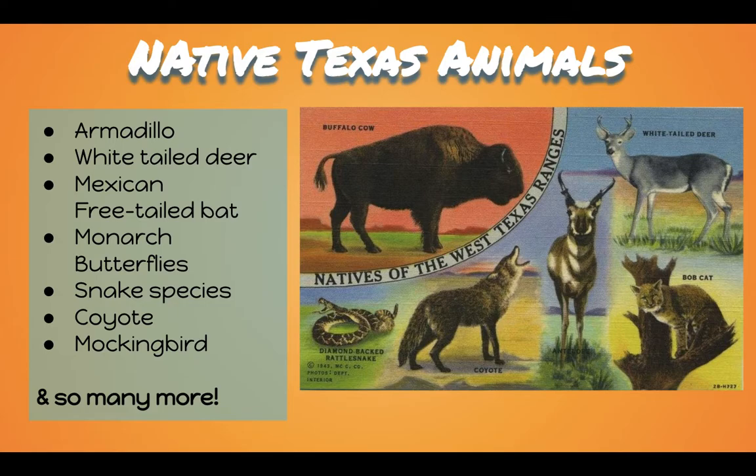First, let's talk about some native Texas animals. Of course we have a ton of wildlife here in Texas, but I've come up with a short list and we're going to explore a few on that list a little closer. Some examples include the armadillo, the white-tailed deer, the Mexican free-tailed bat, monarch butterflies, various snake species, coyotes, mockingbirds, buffalo, antelope, and bobcats.